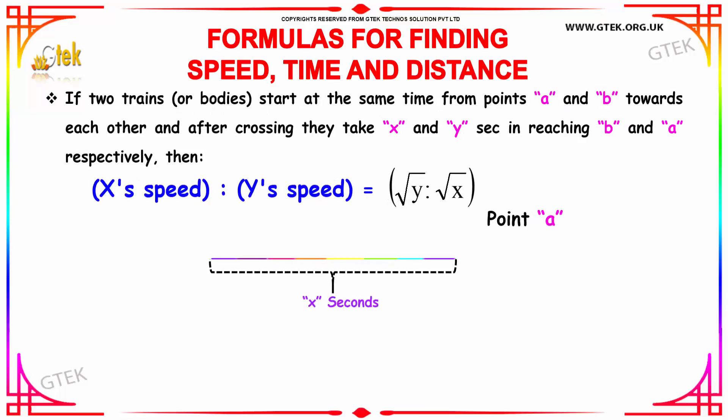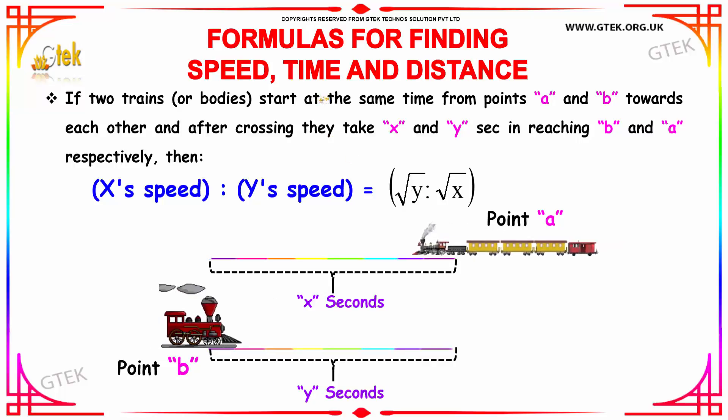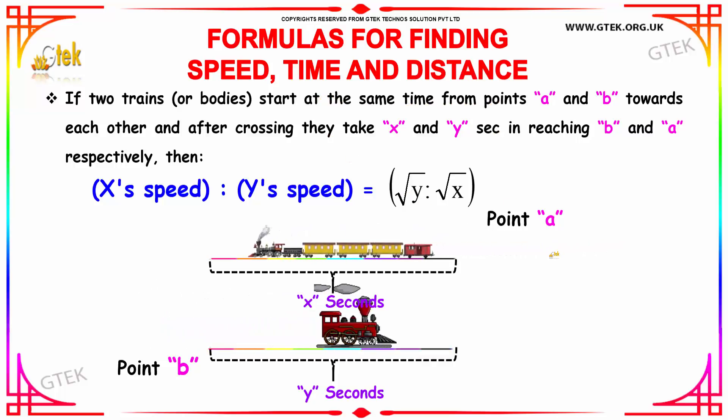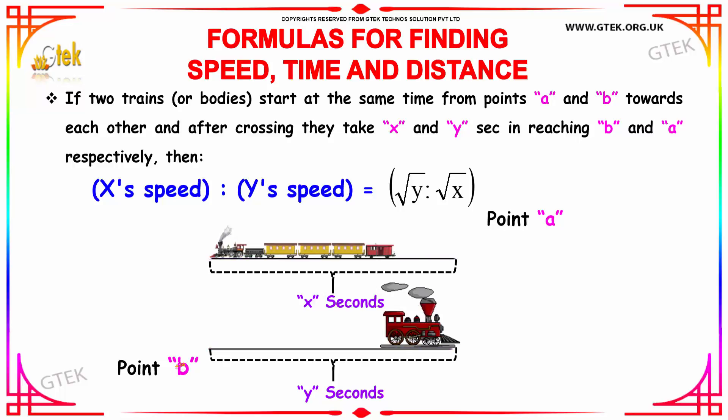Let's see further on the formulas of trains. If two trains start at the same time from points A and B towards each other, and after crossing they take x seconds and y seconds in reaching B and A respectively, then the ratio of speed is calculated as X's speed to Y's speed equals root of y to root of x. That's the formula.